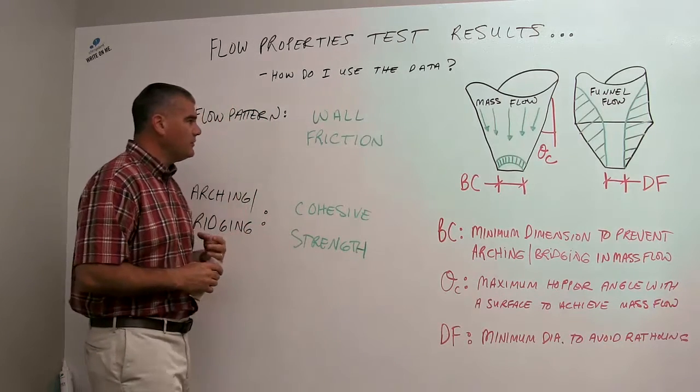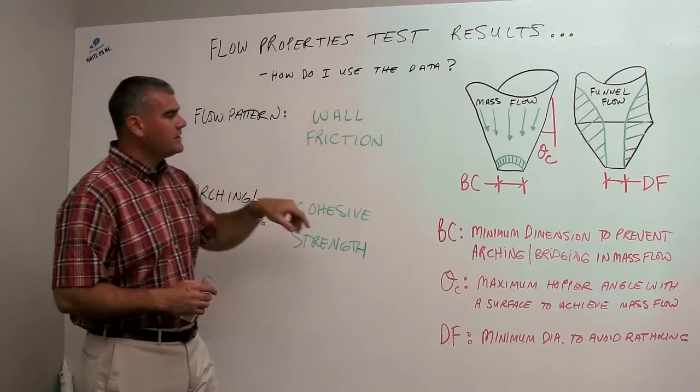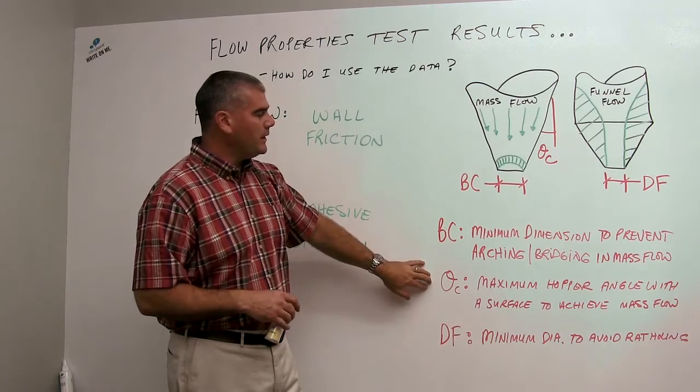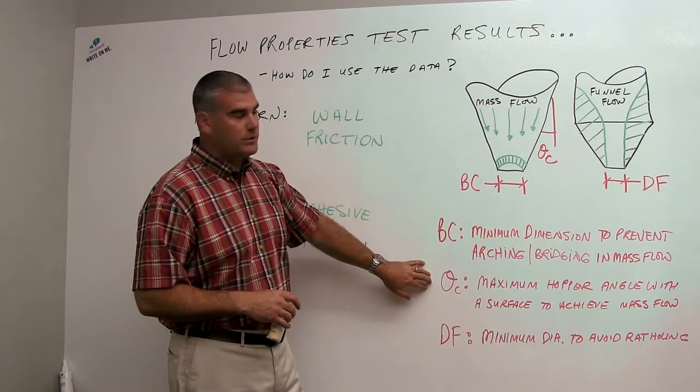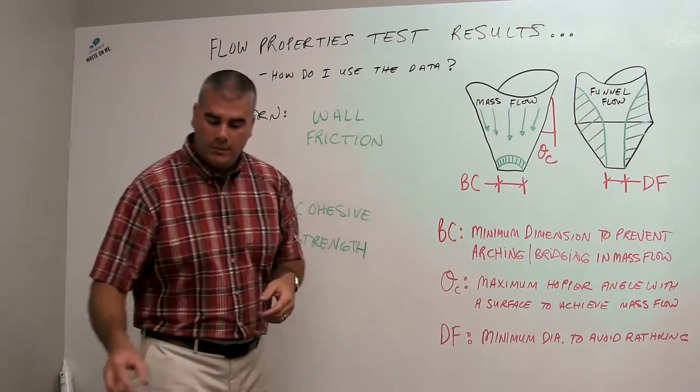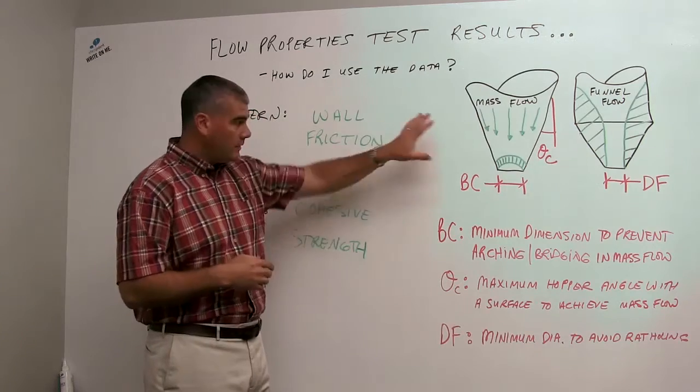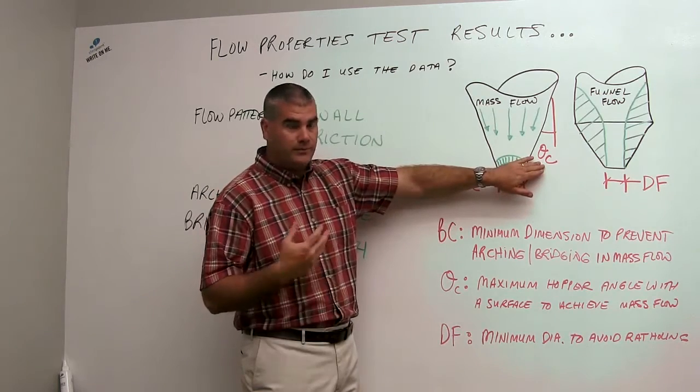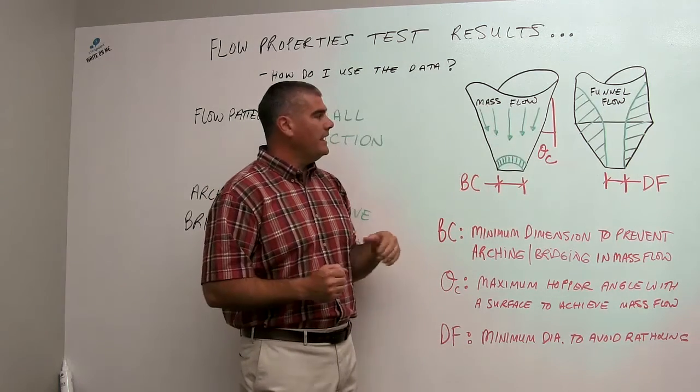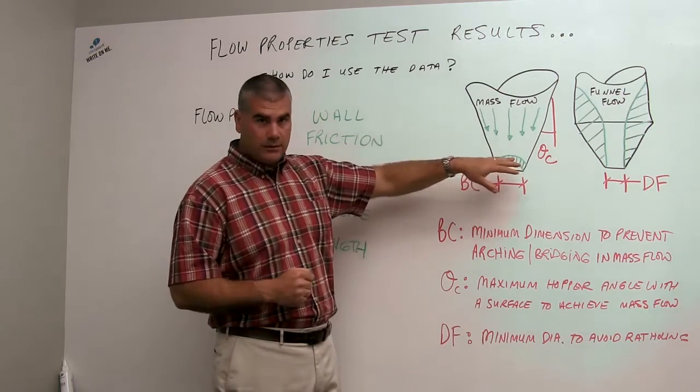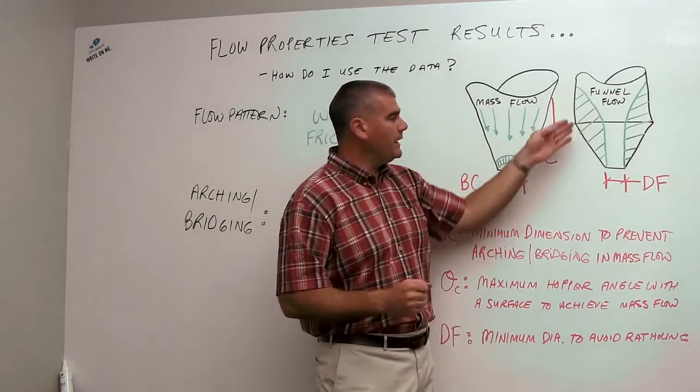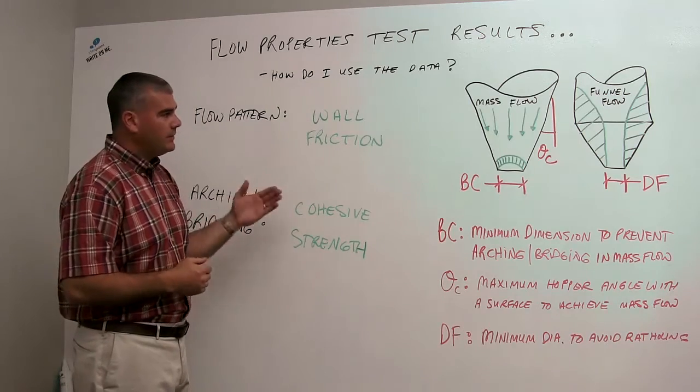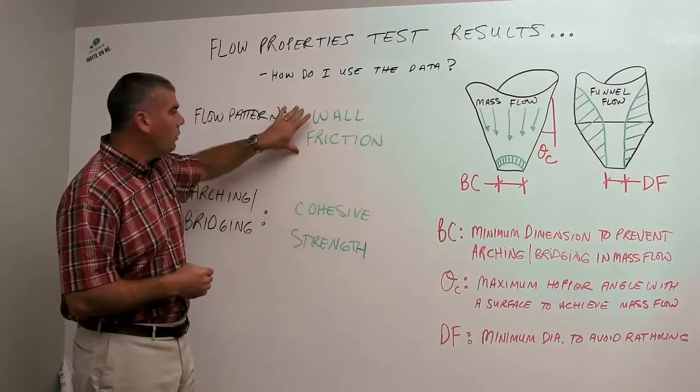It's going to tell us the angle of the hopper needed to impart flow against the walls. That angle referenced in the test report in the wall friction section is something called theta c. It's referenced from the vertical, and it tells me the maximum hopper angle with a surface to achieve flow against the walls or mass flow. So I'd be able to go into the test report, I would look up for a conical hopper with a surface-sized outlet, what would be that critical angle needed to achieve flow along the walls, again called theta c. And that would give me mass flow. If that angle doesn't meet the requirement, then I would have funnel flow, meaning there'd be no flow along the hopper walls.